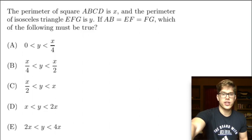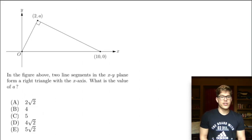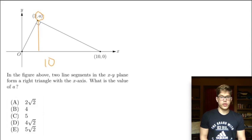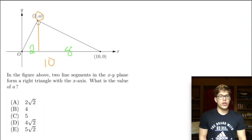That was probably the hardest problem yet. Let's look at the next problem. In the figure, two line segments in the x-y plane form a right triangle with the x-axis. What is the value of A? We know that this length is 10. Let's drop a quick perpendicular line to separate this out. This is moved over two units, so this section is two and this segment is eight. We need to find the height of this line to know A.